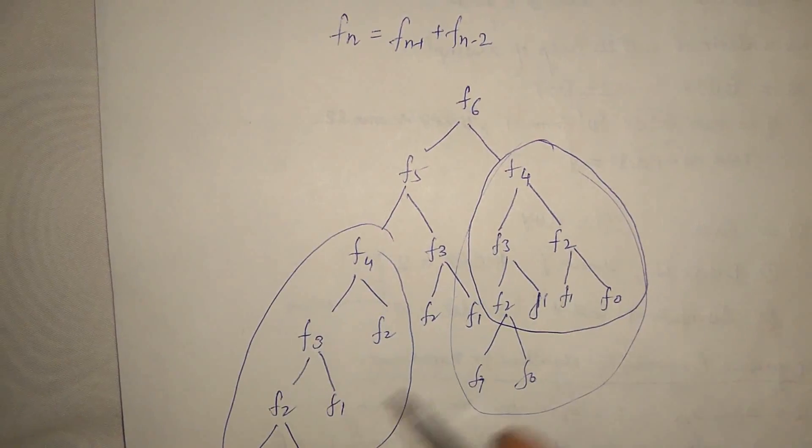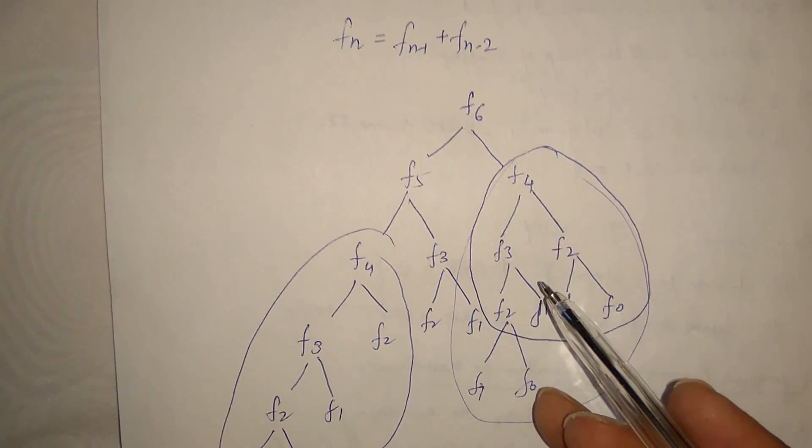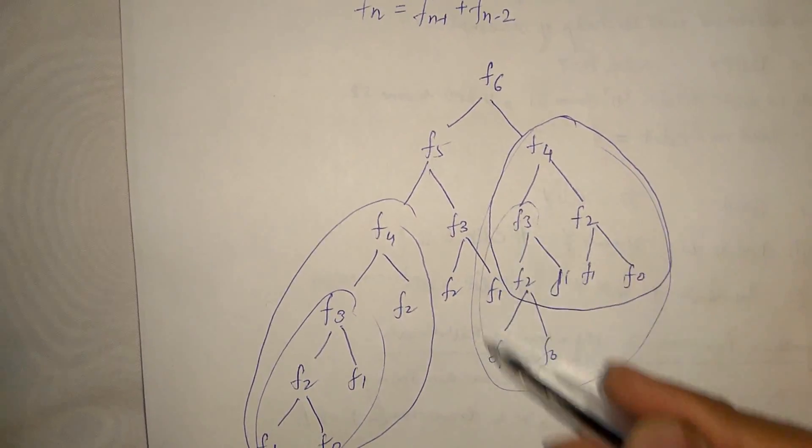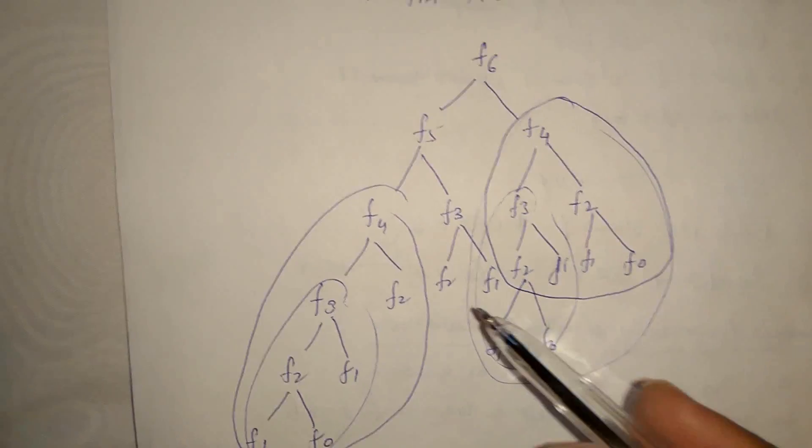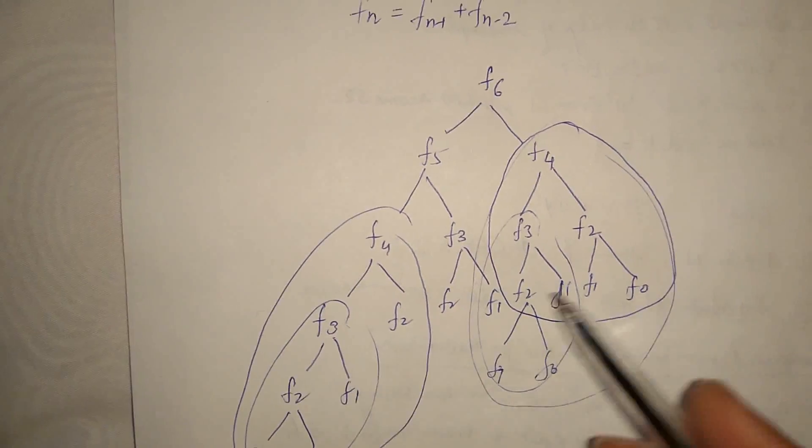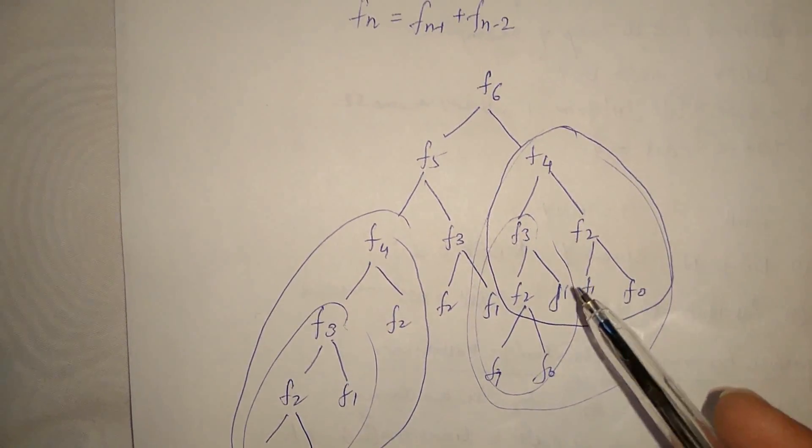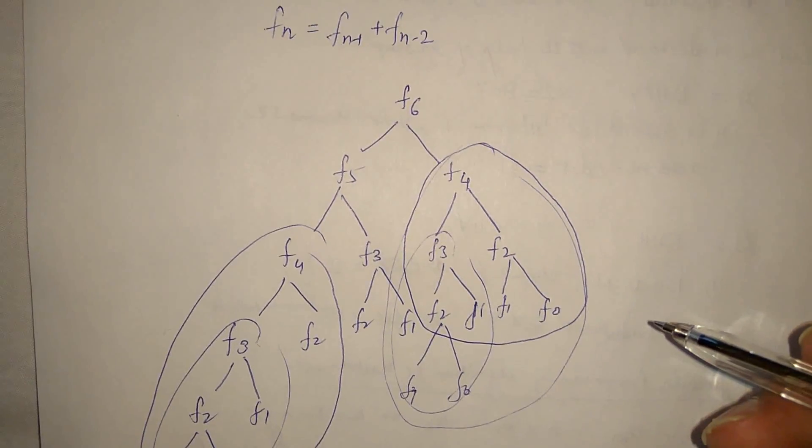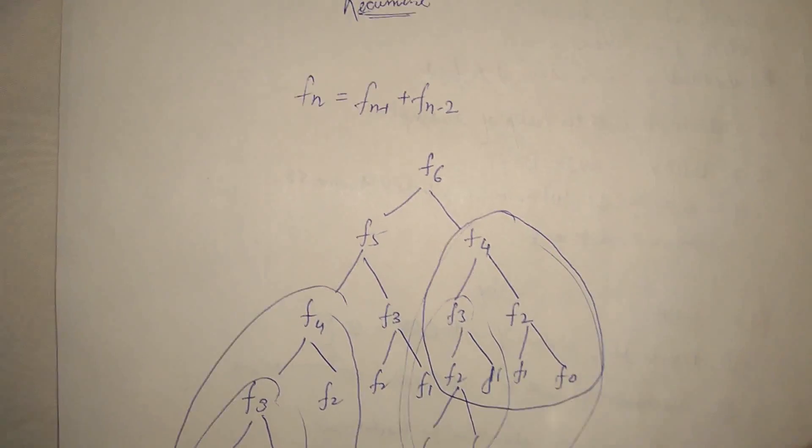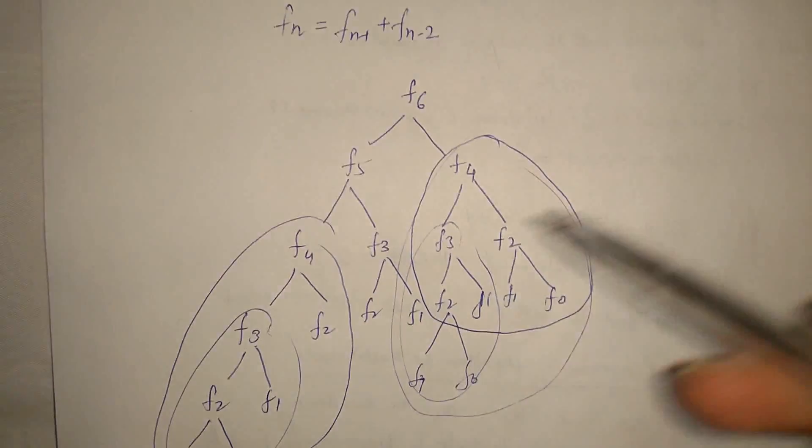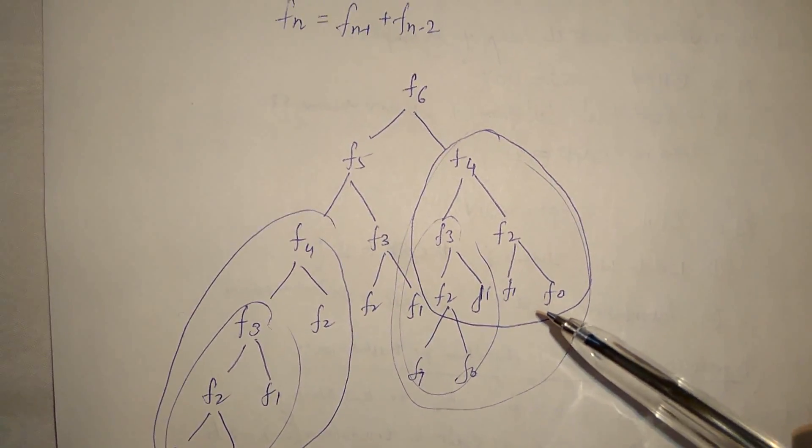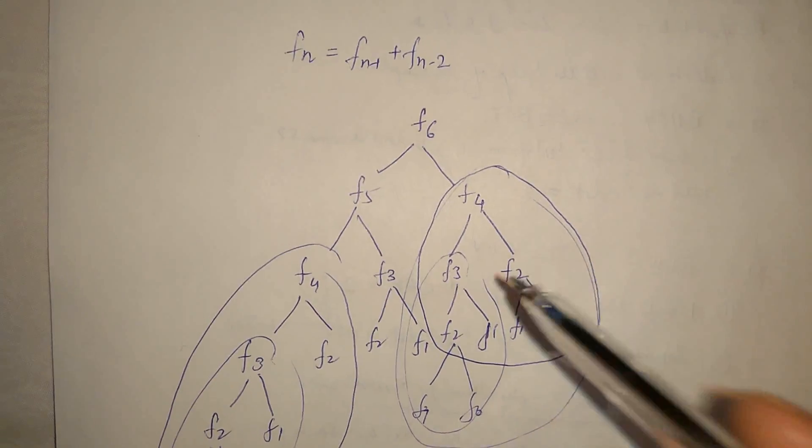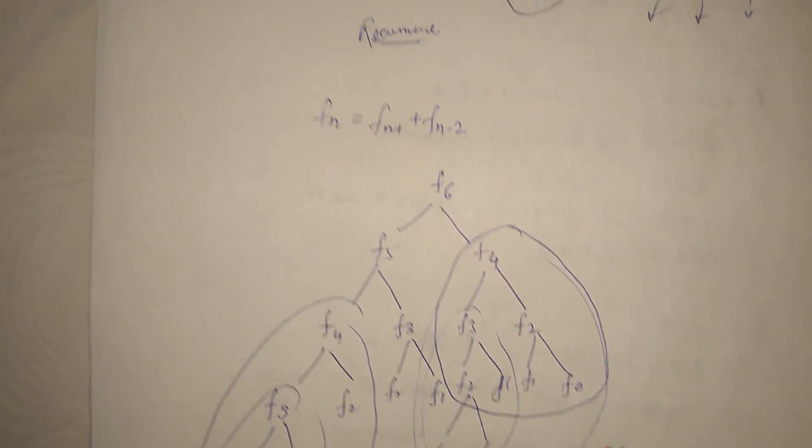So this F4 and F4 is twice solved. And within this also, this F3 and this F3 is also four times solved. If we see this, this is four times solved. So the time complexity, if we use this recursion and solve each time when we found this problem, that is subproblems, it will take much time.